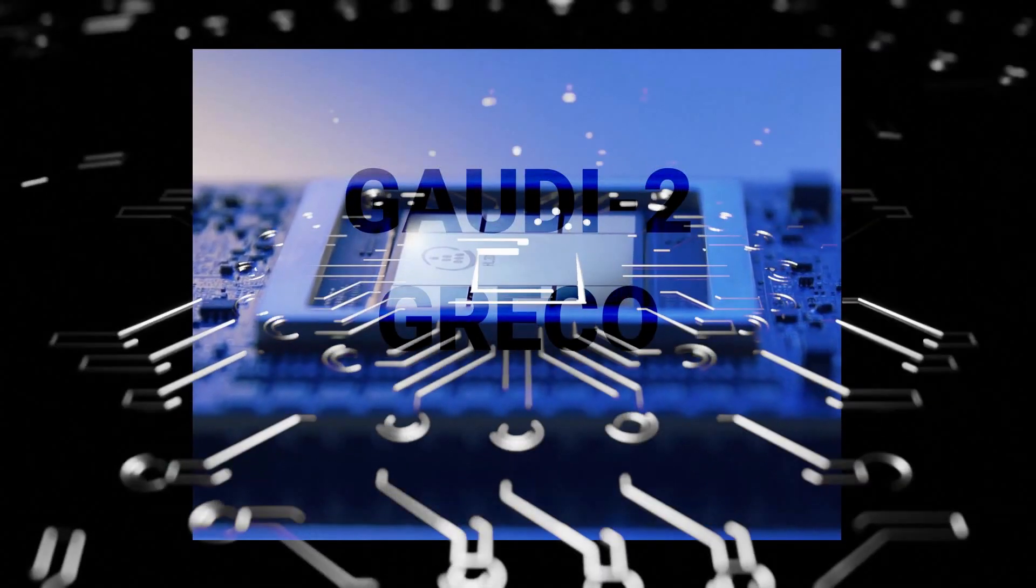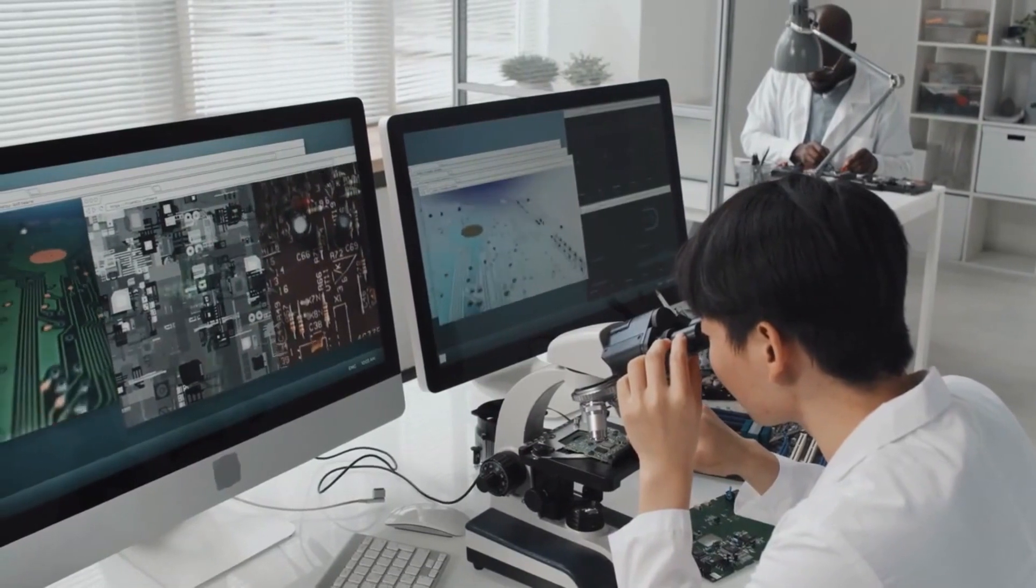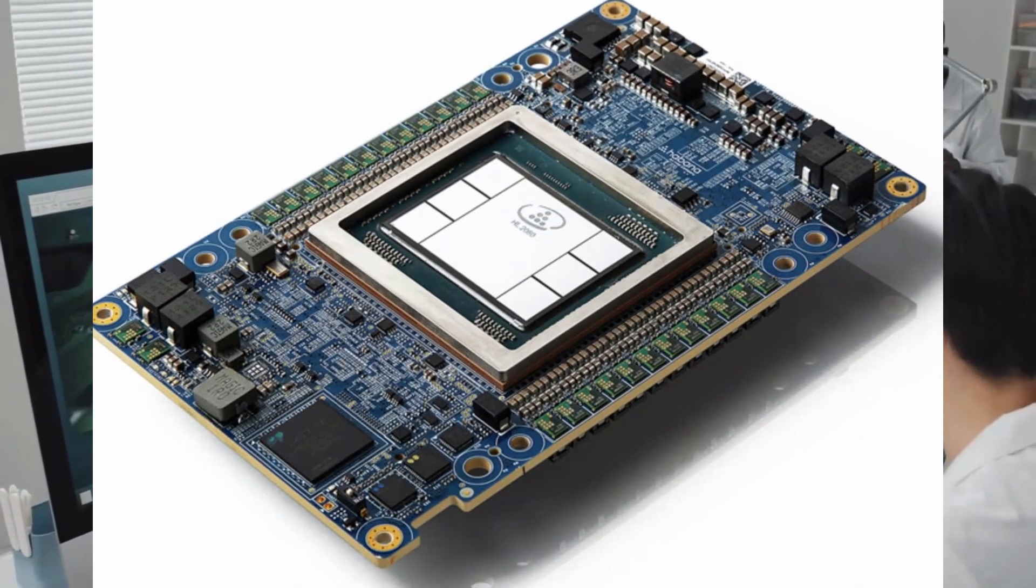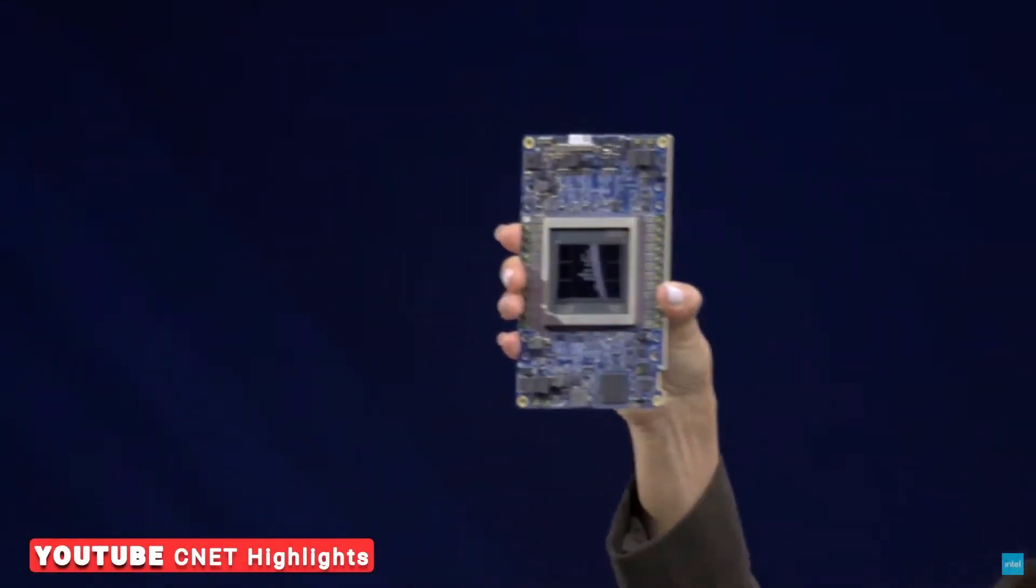Intel's Habana Labs unveils Gaudi 2 and Greco AI processors. Intel's Habana Labs launched two major new products: Gaudi 2, the second generation of the Gaudi Deep Learning Training Processor, and Greco, the successor to the Goya Deep Learning Inference Processor.